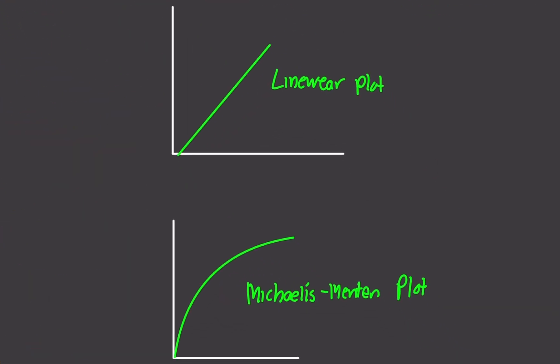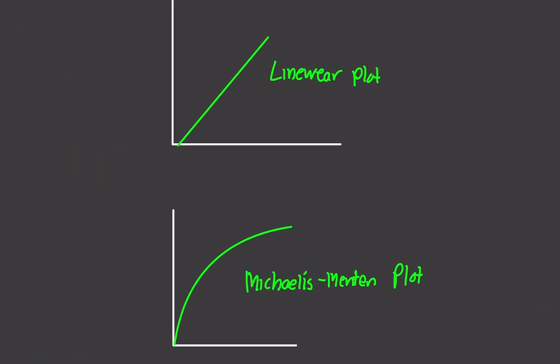So how do you know the difference between the Lineweaver plot and the Michaelis-Menten plot? This is a very typical MCAT question — they love to talk about these two. The Lineweaver plot is the one with a straight line; that's all you have to look for. The one with the straight line is the Lineweaver plot, and the one with the curve is the Michaelis-Menten plot.